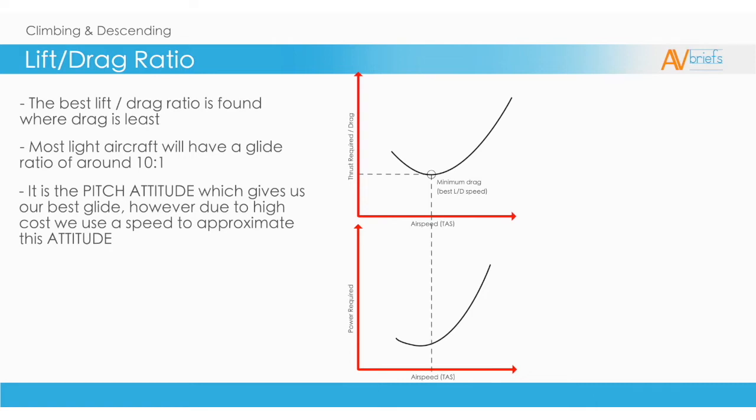A tangent is a straight line that touches a curved surface at a point but does not cross it at that point. You can see the line is touching the underside of the power required curve on the lower graph.